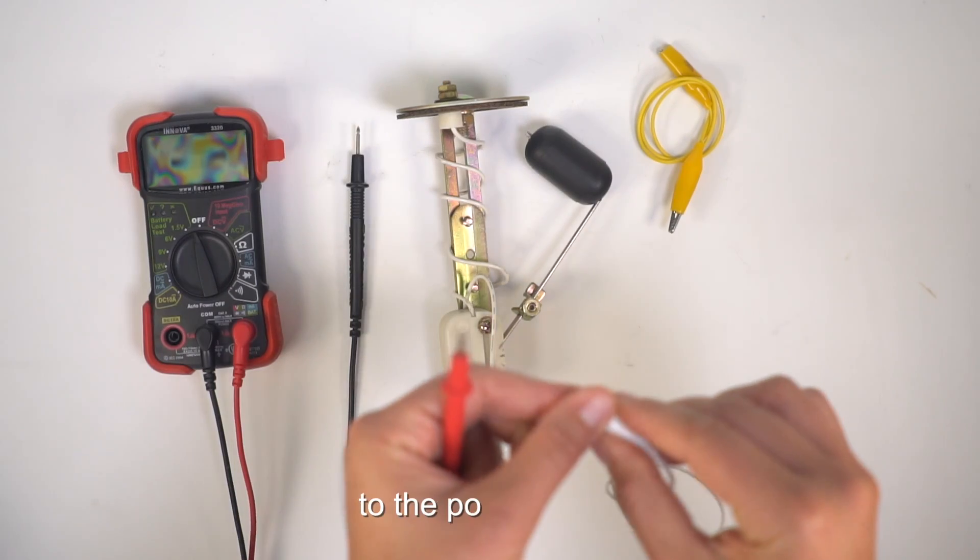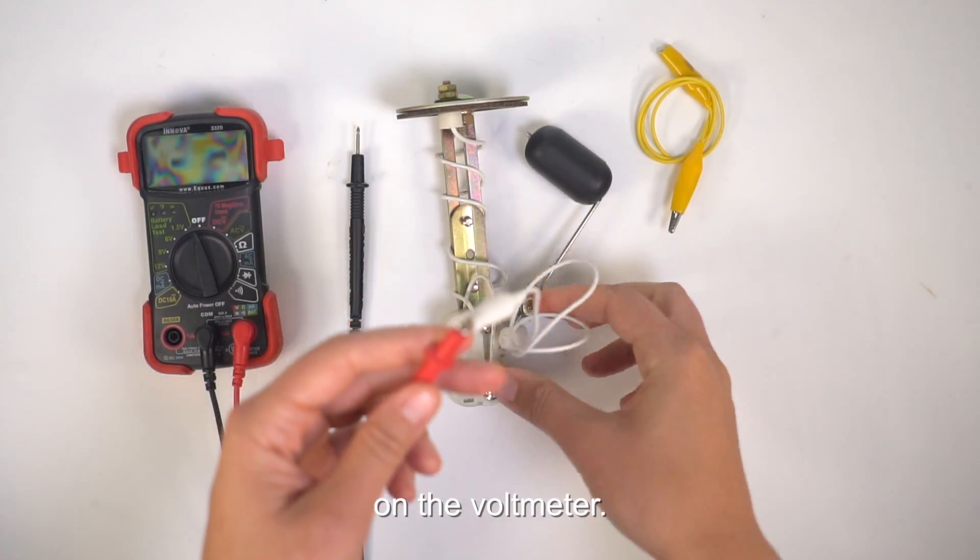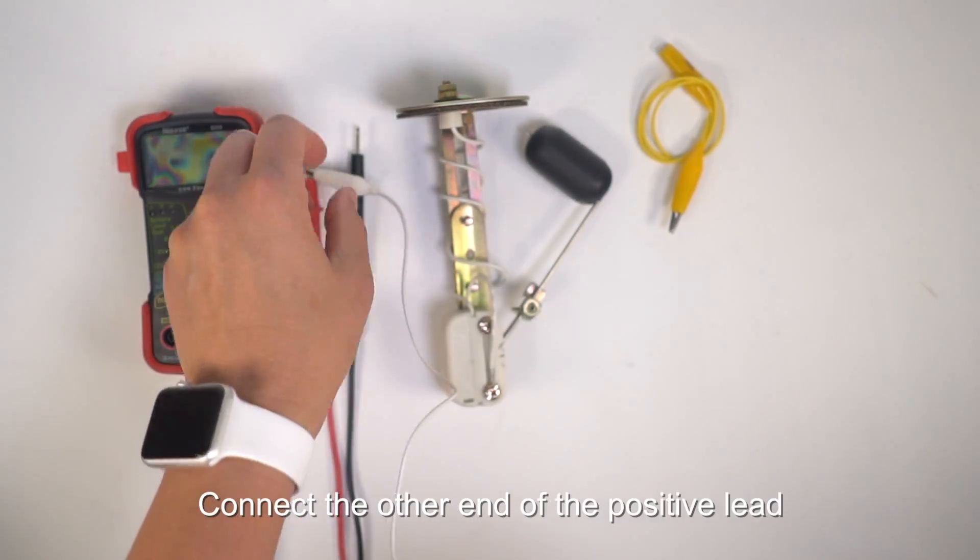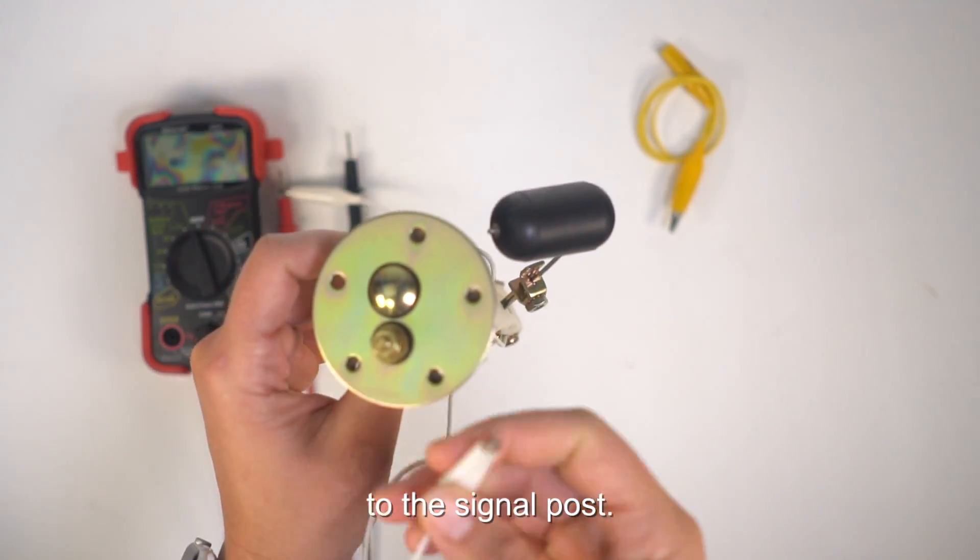connect the white alligator clip to the positive lead on the voltmeter. Connect the other end of the positive lead to the signal post.